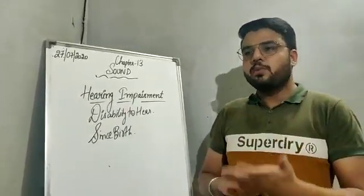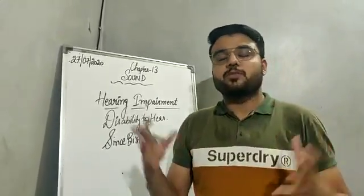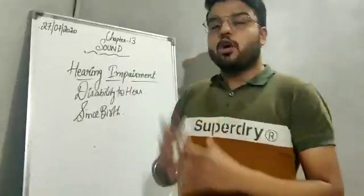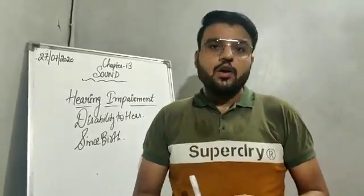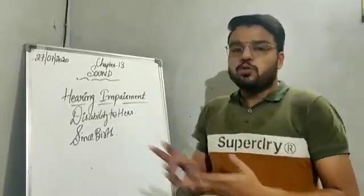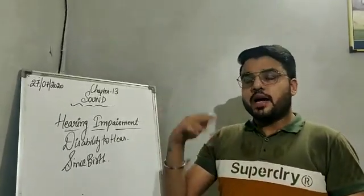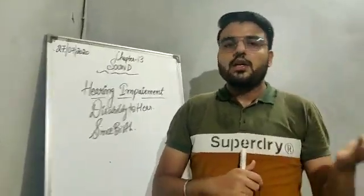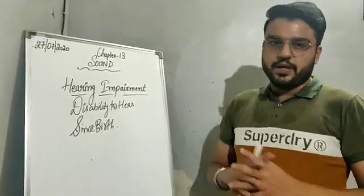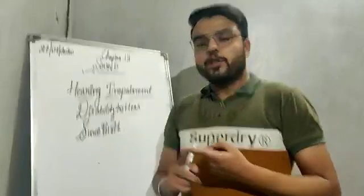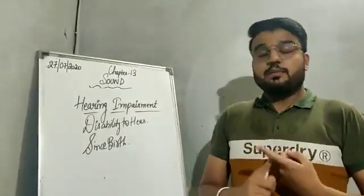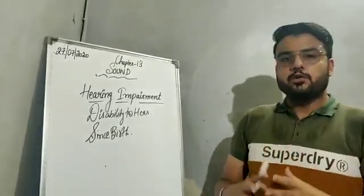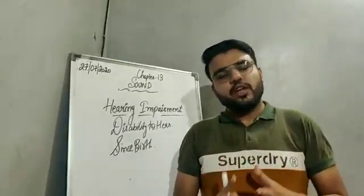Hearing impairment can also be caused by noise pollution — when a person is exposed to very loud noise, permanent hearing impairment can occur. It can also be caused by some injury in the brain or in the ear. Or it can be due to old age — some people at older ages are not able to hear things properly, or sometimes cannot hear anything at all. So hearing impairment can be due to noise pollution, present since birth, injury to the brain or ear, or old age.